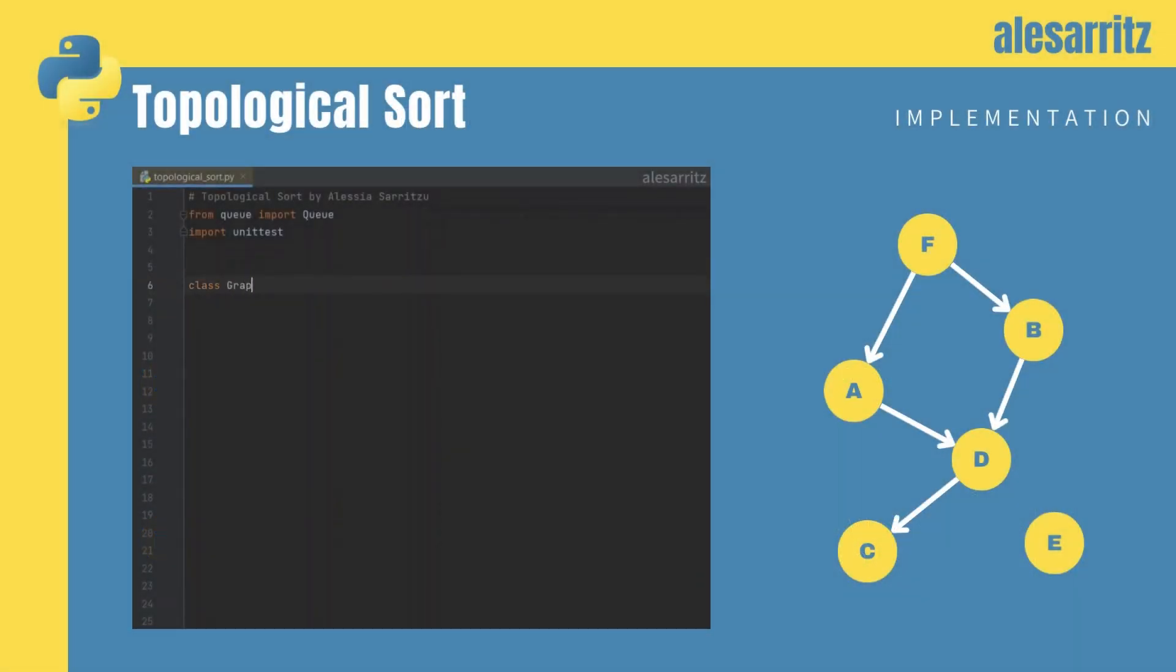We will begin the implementation by writing the code for the graph and for the graph node. This will speed up the testing phase.